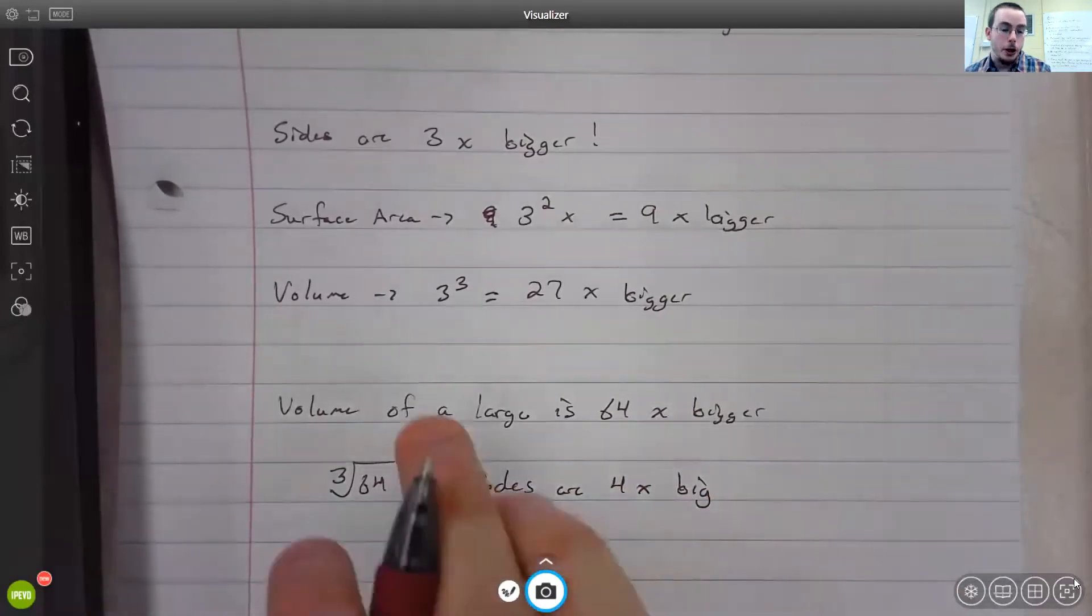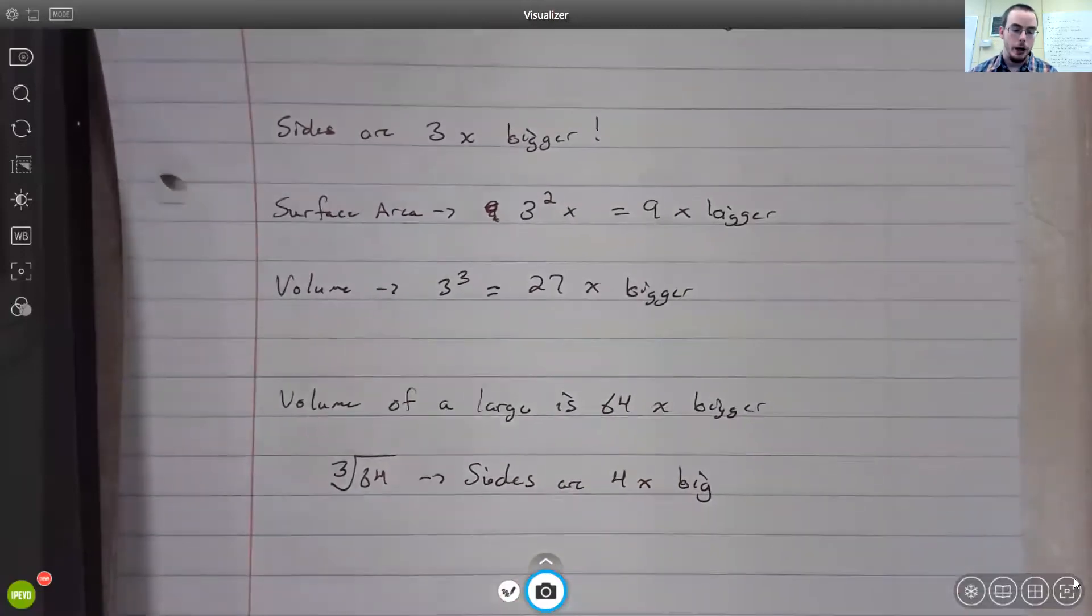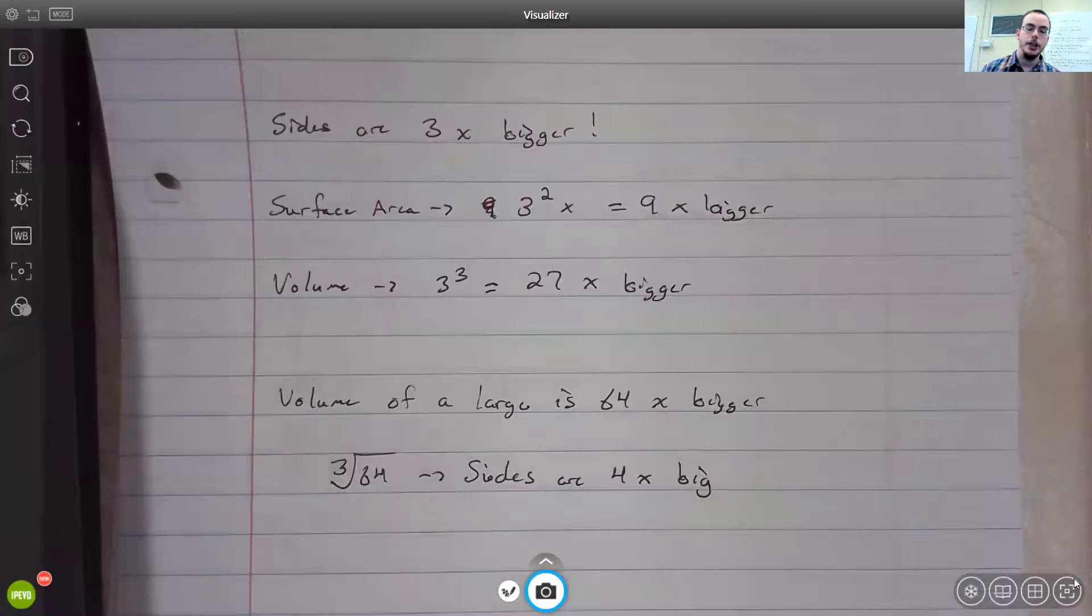But if your surface area was 64 times bigger, you would do the square root of 64 instead of the cube root, because surface area you get there by squaring it. Those are just some reminders that should help you with the worksheet.